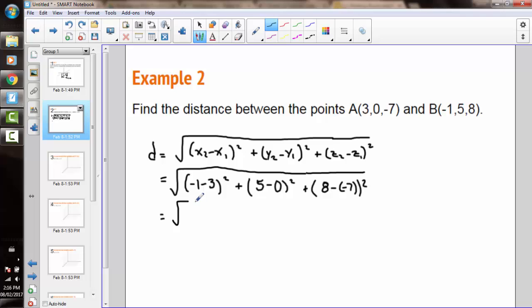Or 16, plus 25, plus 225. And that has an exact value of the square root of 266. We should check and see if we can rationalize that by finding a perfect square that divides into 266. I don't think there's a possibility. So our approximate answer for the distance between these two points would be about 16.31 units.